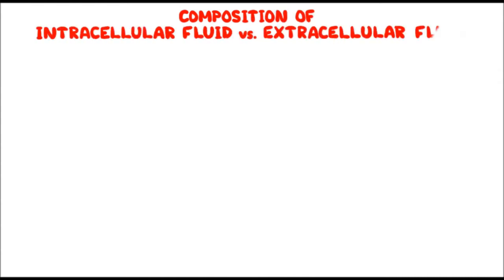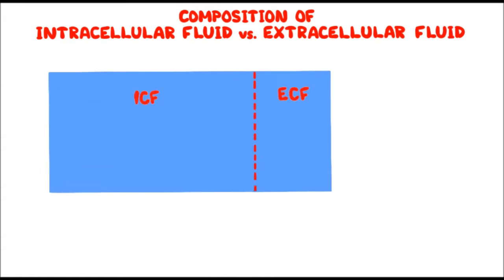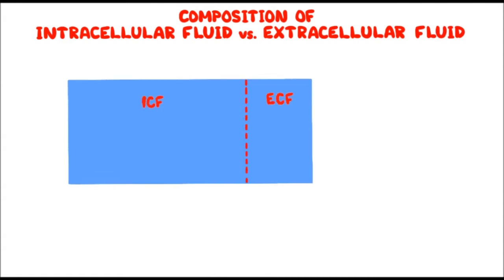Let's talk about the composition of intracellular fluid and extracellular fluid. The compositions of intracellular fluid and extracellular fluid are strikingly different. The major cation in extracellular fluid is sodium, and the balancing anions are chloride, bicarbonate, and phosphate. Sodium creates the most osmolarity of the extracellular fluid.